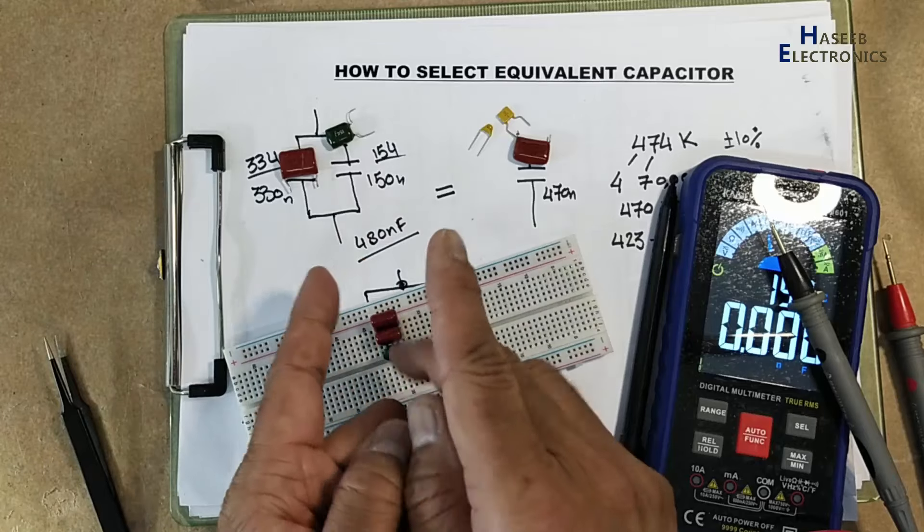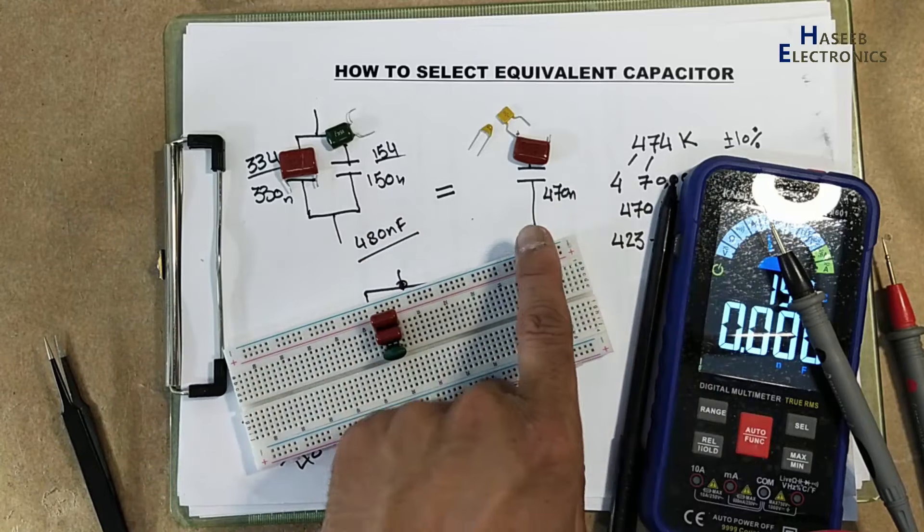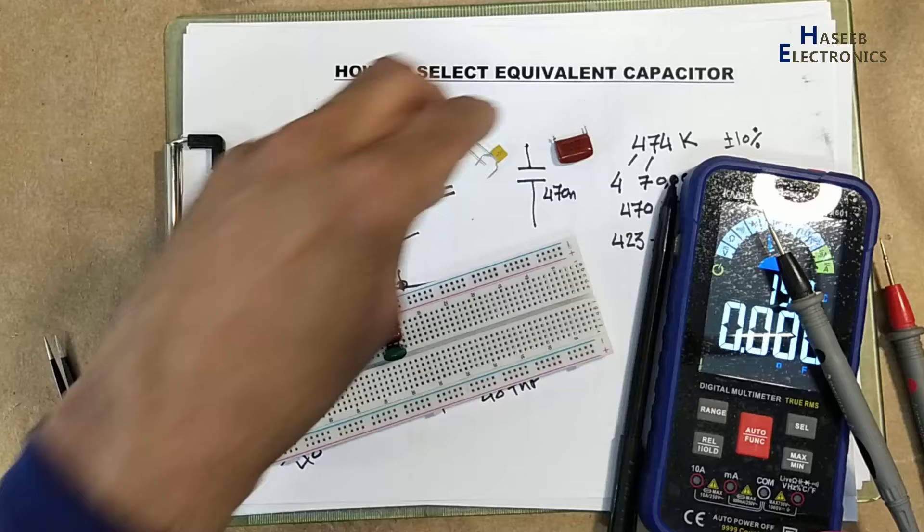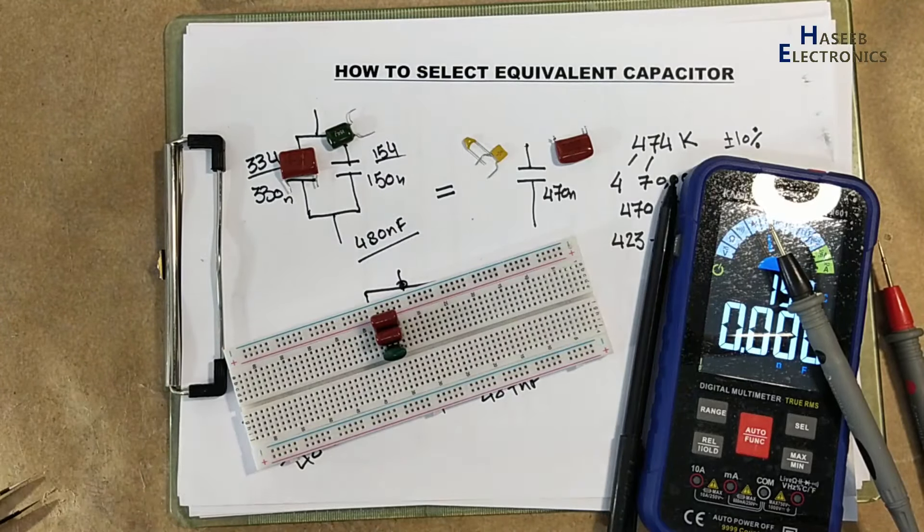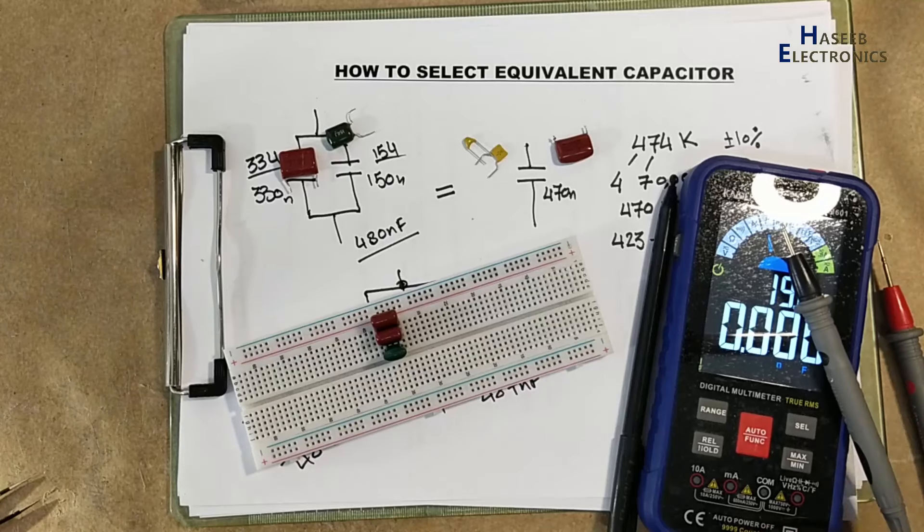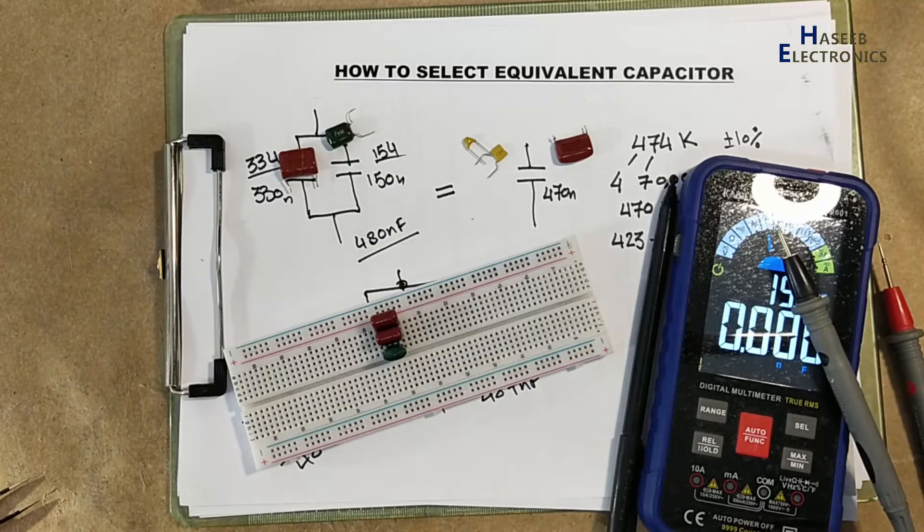476 nanofarad, so that is much closer to this value. So in this way we can calculate and we can combine two capacitors, three capacitors in parallel to bring the same value. If this video is informative for you, you can like it. If you have any question, please write in the comments. Thanks for watching, assalamualaikum warahmatullahi wabarakatuh.